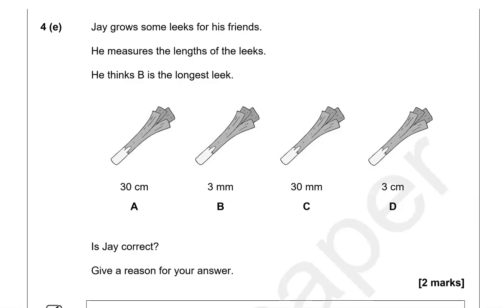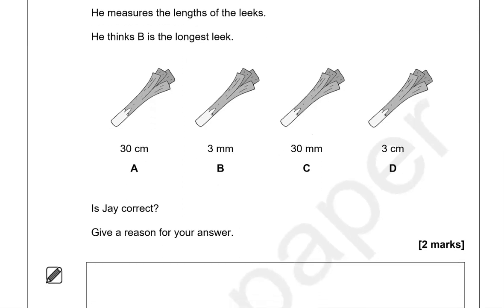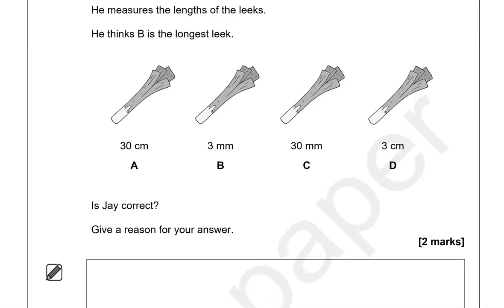Jay grows some leeks for his friends and measures their length. He thinks B is the longest leek — is Jay correct? We have centimetres and millimetres. Centimetres are longer than millimetres, so we focus on the centimetre measurements: 30 centimetres versus 3 centimetres. 30 is longer, so A is the longest. Jay is not correct.